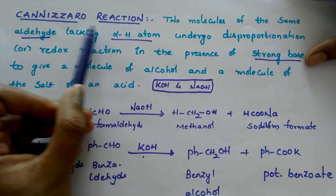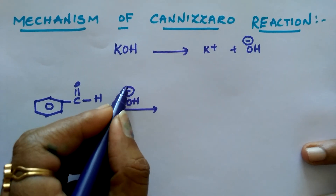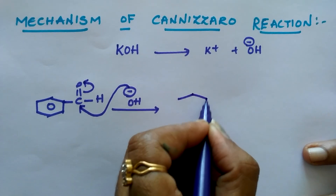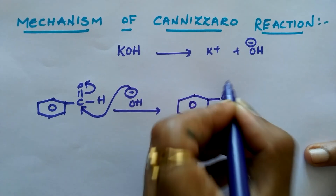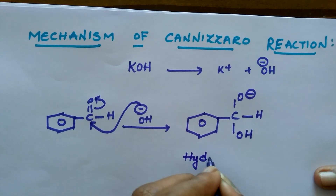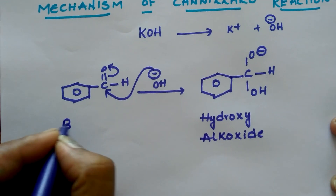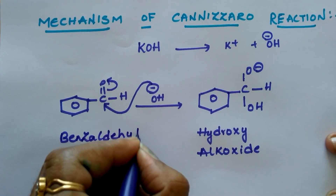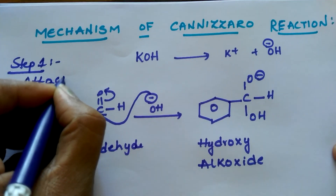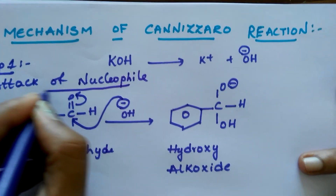Let us see the mechanism of the Cannizzaro reaction. A nucleophile comes and attacks this carbon. Whenever this nucleophile attacks this carbon, migration of electrons takes place, and it results in the formation of a hydroxy alkoxide ion. One molecule of benzaldehyde has reacted with the nucleophile. This is called step number one — the attack of nucleophile step.